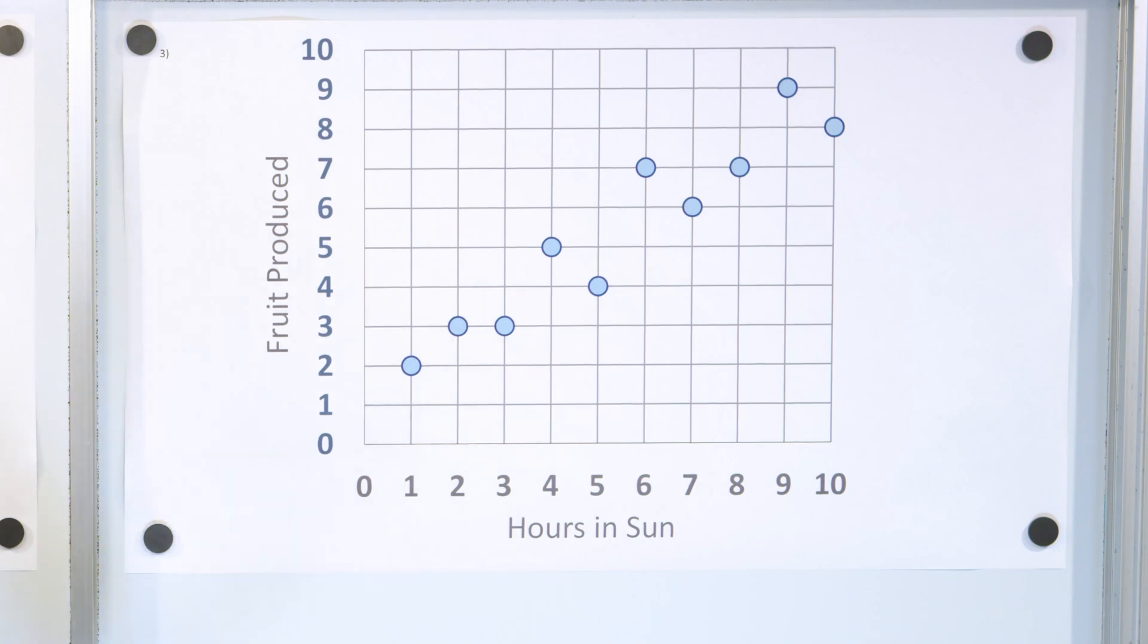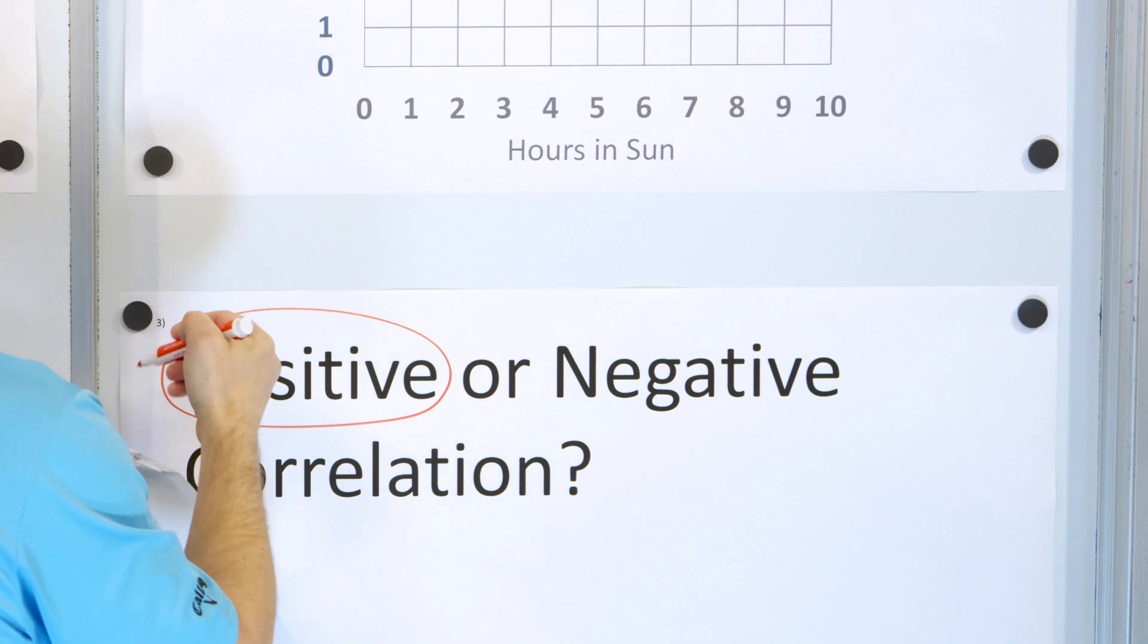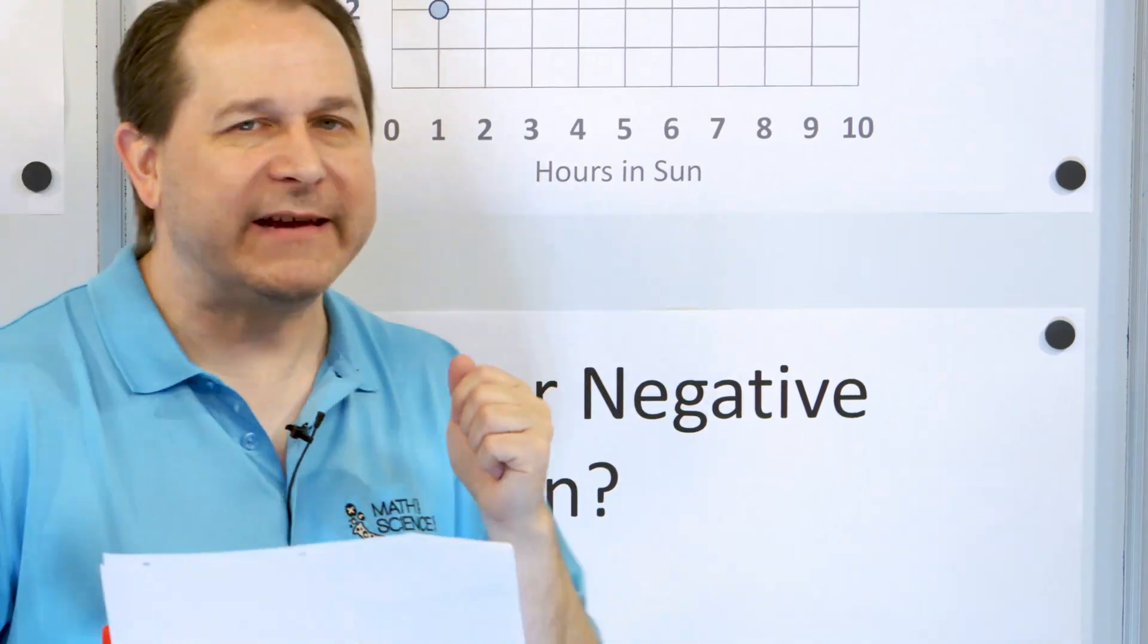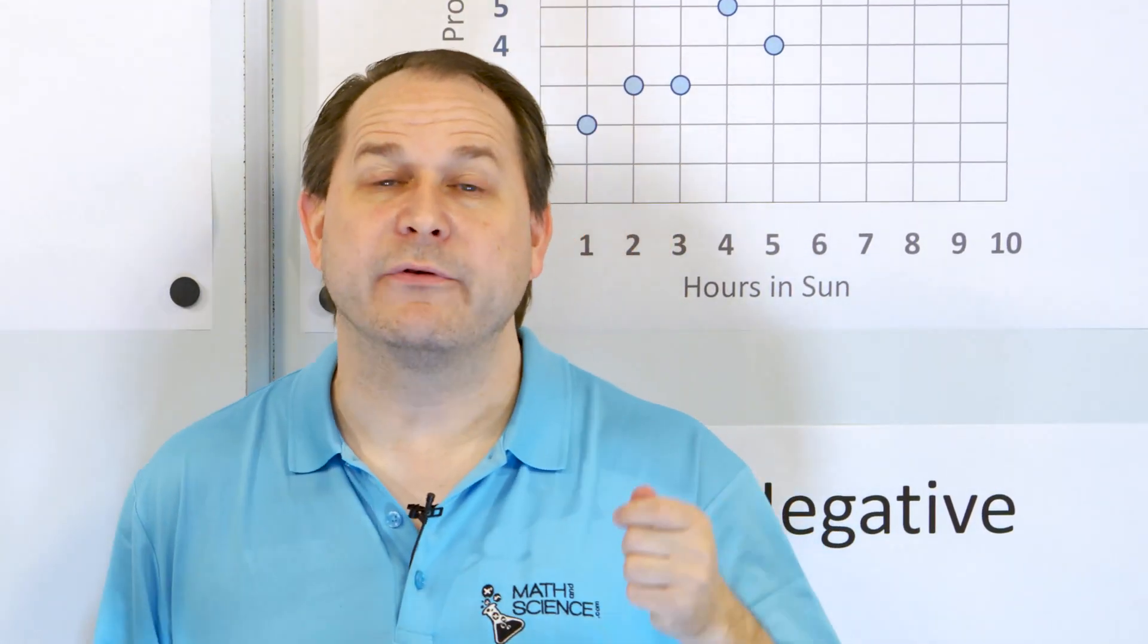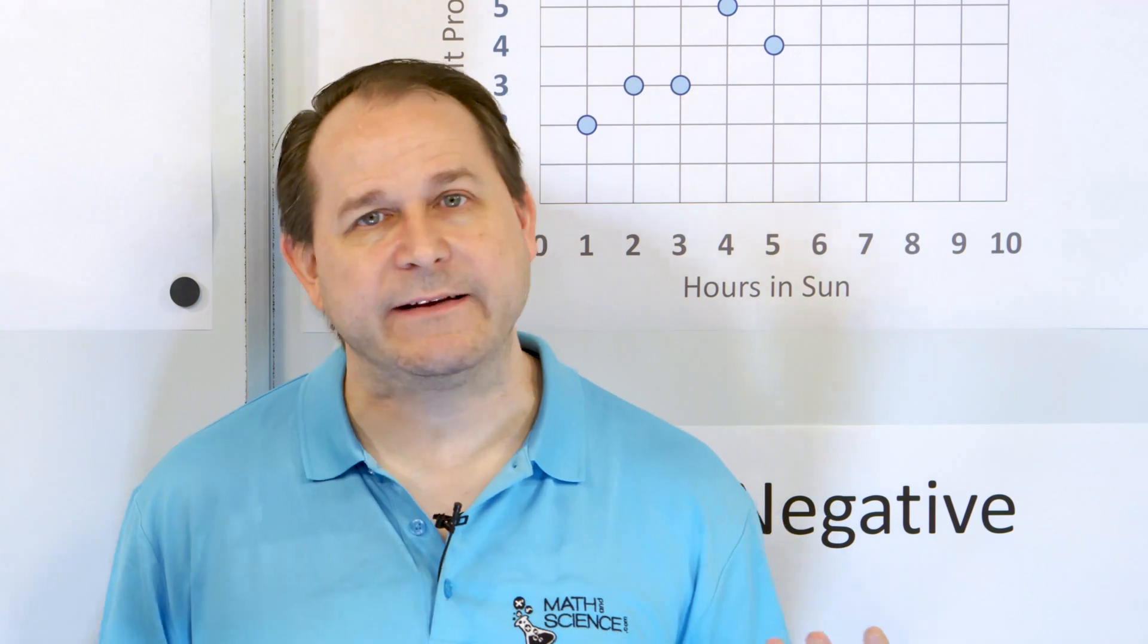So is this data correlated? Yes. Is it positive or negative correlation? We're going to say that it's a positive correlation. Now, does it mean that the number of hours in the sun is causing the trees to produce more fruit? It's possible, and that would make sense to me, but this data is not proving that. There's a lot of information that's not in this.